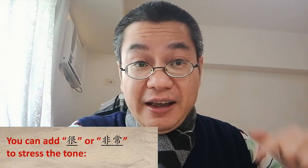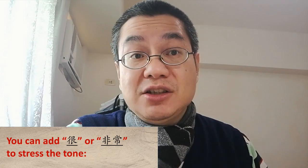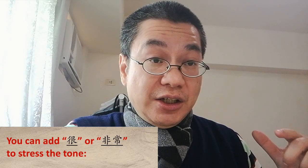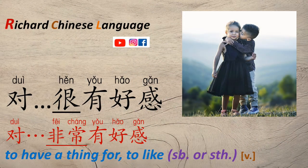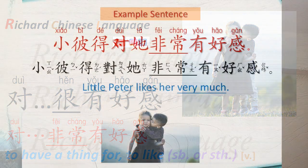You can also use 很, meaning 'very,' in this phrase to stress the tone. So you can say: 对 someone or something 很有好感, or 对 someone or something 非常有好感. Let me give you more example sentences.